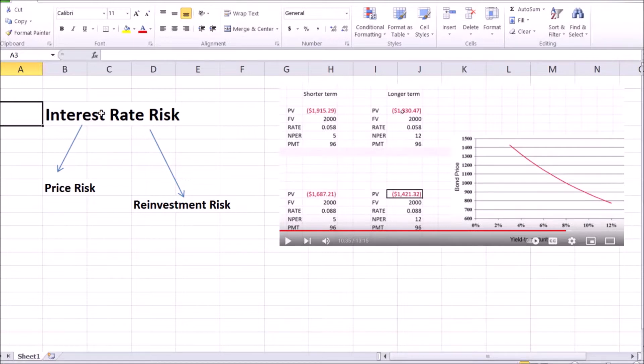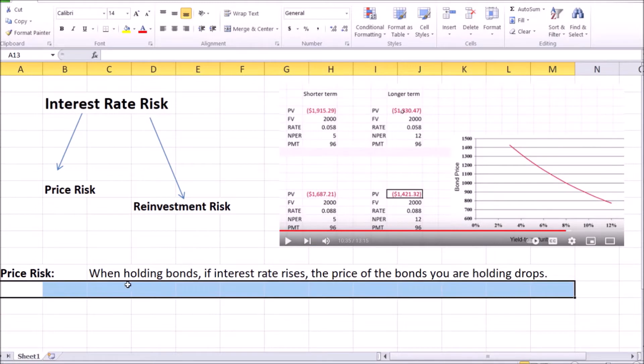Price risk is the part of the interest rate risk related to the subtopic we discussed in last week's video. As you've already seen, price risk is the risk that when you're holding bonds, if interest rates change—especially if interest rates rise—then the price or value of the bonds you're holding will drop. This won't affect you much if you hold the bonds until they mature without selling them, as interest rate changes aren't supposed to affect the face value you receive when the bond matures.